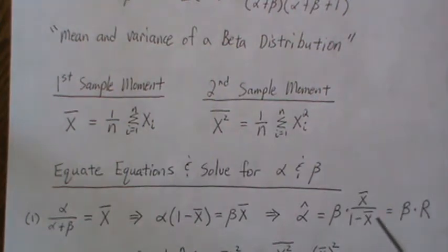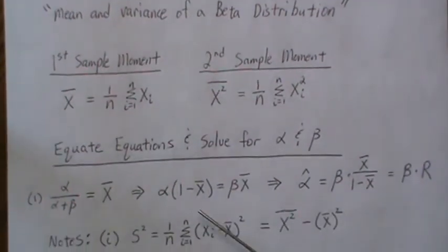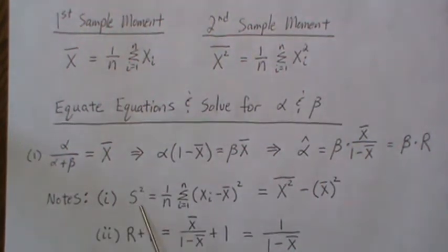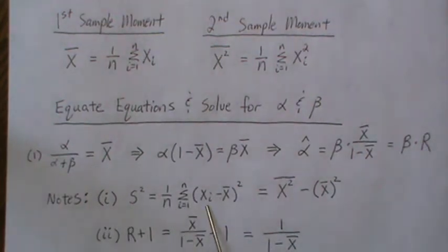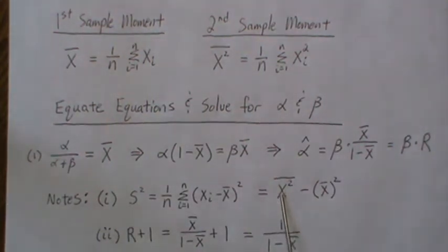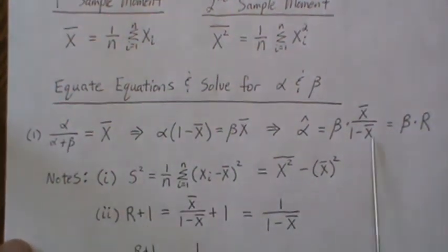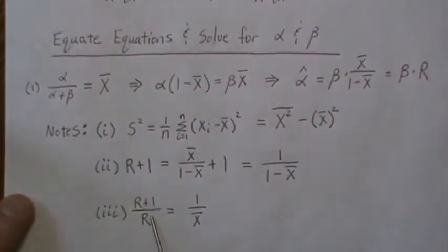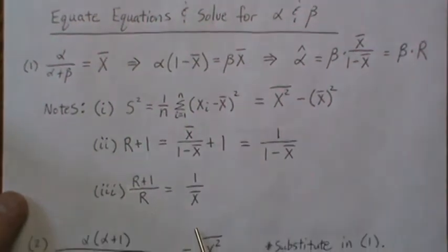And just to make things simpler, I'm gonna call this ratio capital R. So it's beta R. And a couple notes as we go forward, the sample variance that we use in this video, we divide by n, not n minus one. And then the famous shortcut is the second sample moment minus the first sample moment squared. That's the formula for variance. If we look at R, which is this ratio, plus one, it becomes one over one minus the mean. R plus one over R, when you plug this in, simplifies to one over the mean.